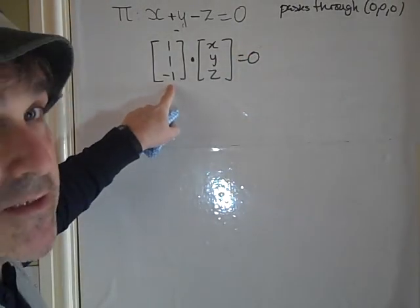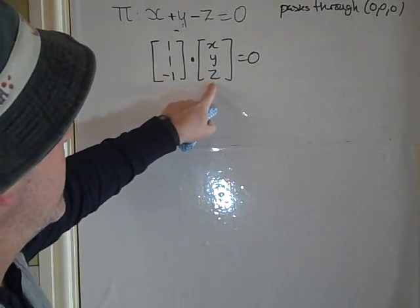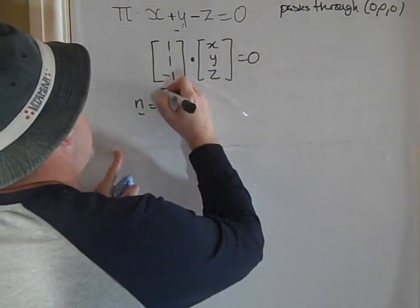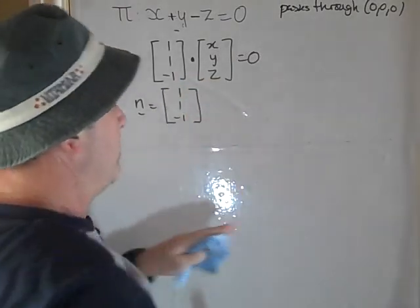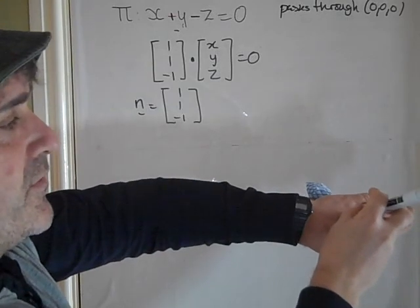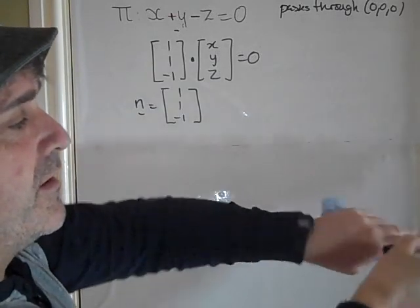So that means that this vector is perpendicular to that vector there. So [1, 1, -1] is the normal vector to the plane. So if the plane is like this, that is the normal vector. It's perpendicular to all the vectors that are within that plane.